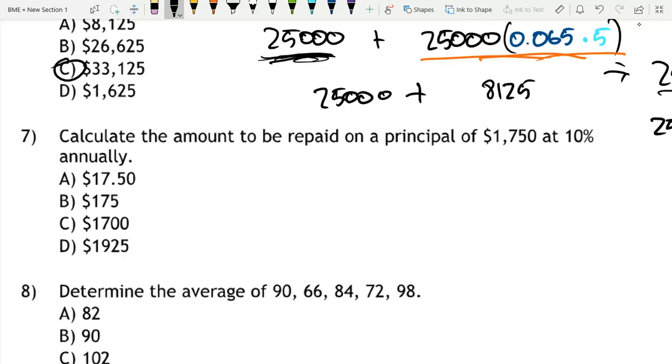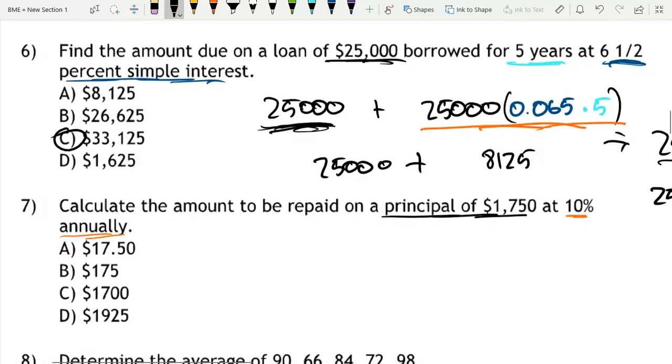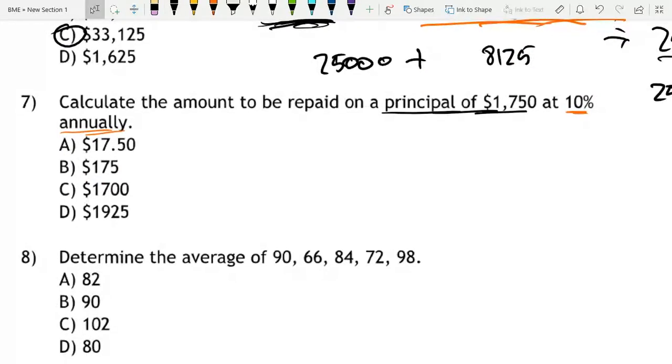So, calculate the amount to be repaid on a principal of $1,750 at 10% annually. In our previous video we had a very similar problem, which is this problem 6, what we discussed in our previous video. But this is equal to $1,750 times by 1 plus 0.1. If you're not familiar with how I got this, watch our previous video and we have a video on simple accumulated from the interest we'll explain that better.